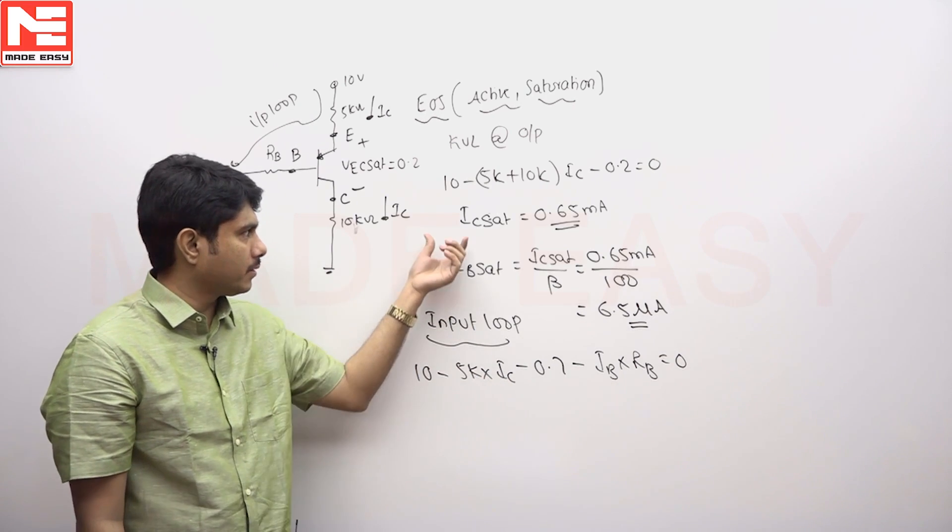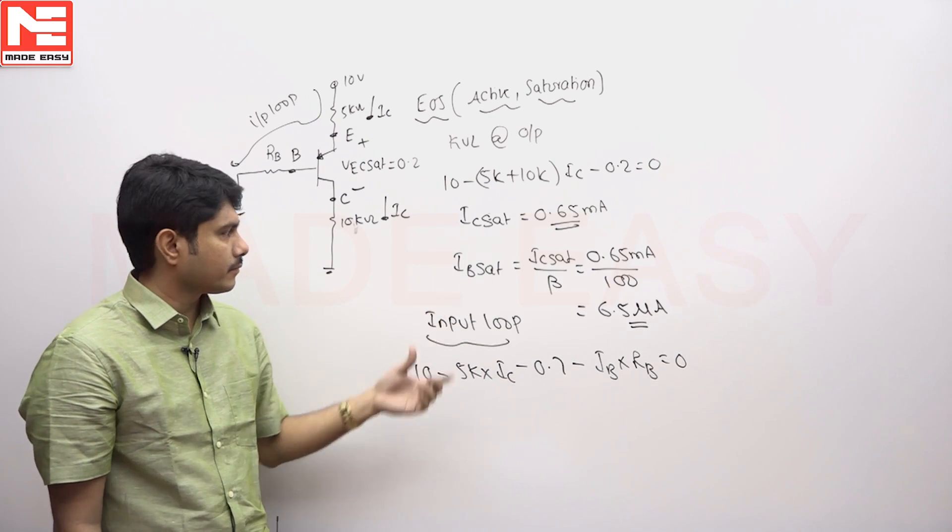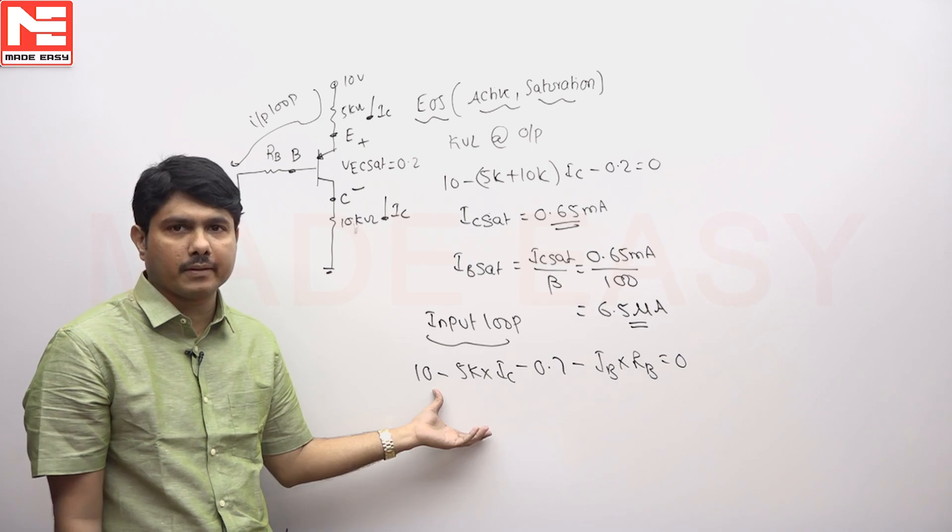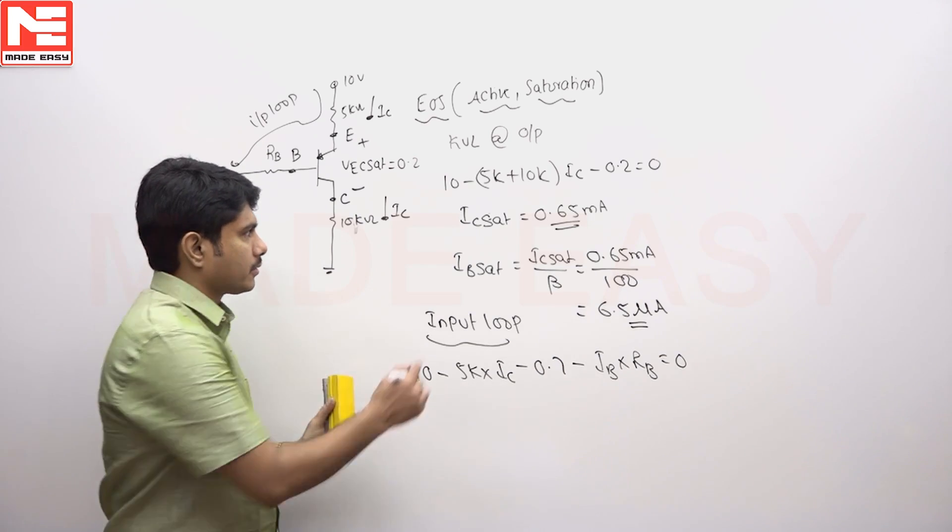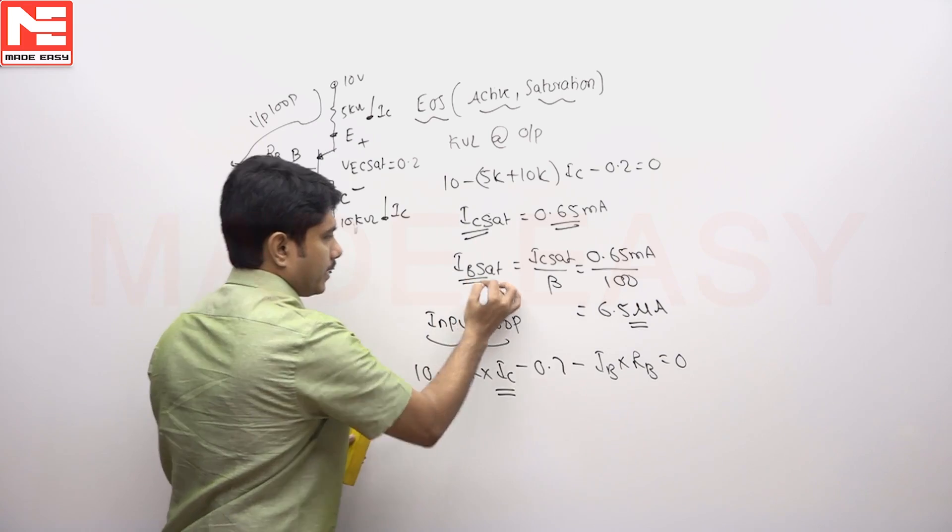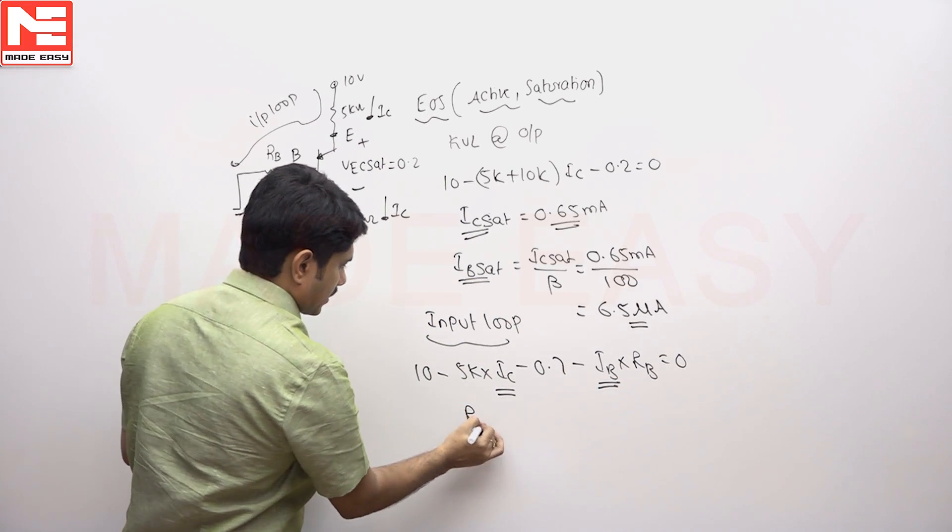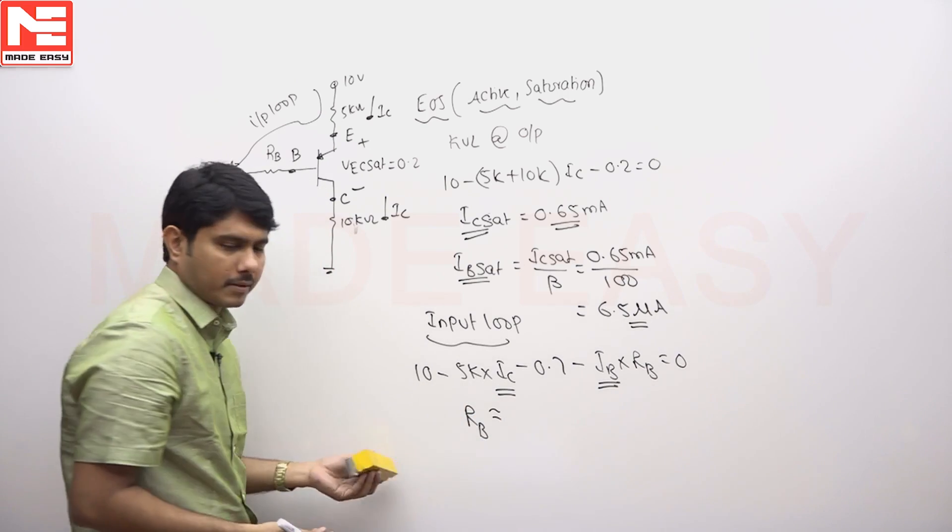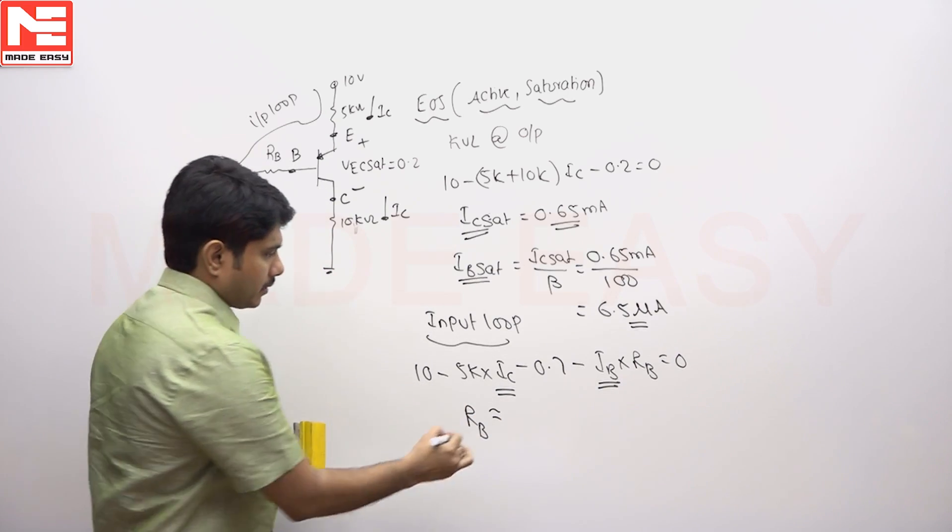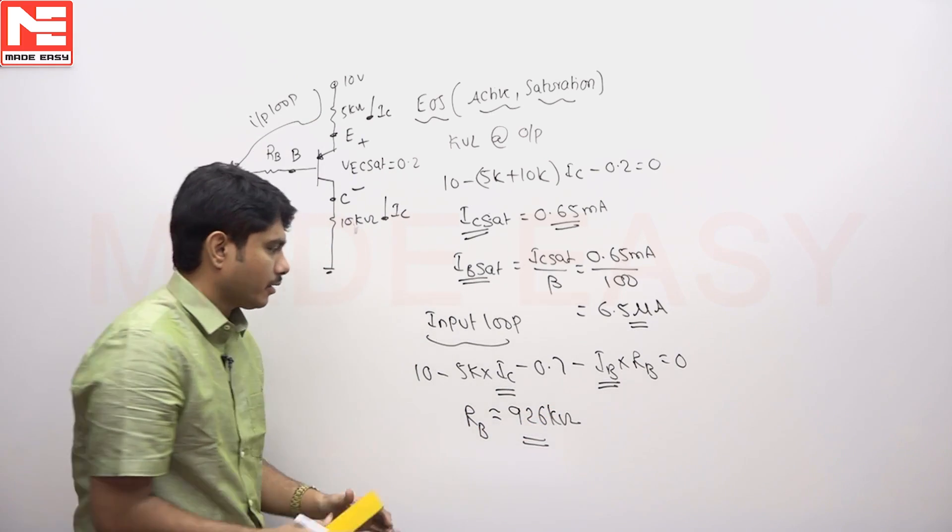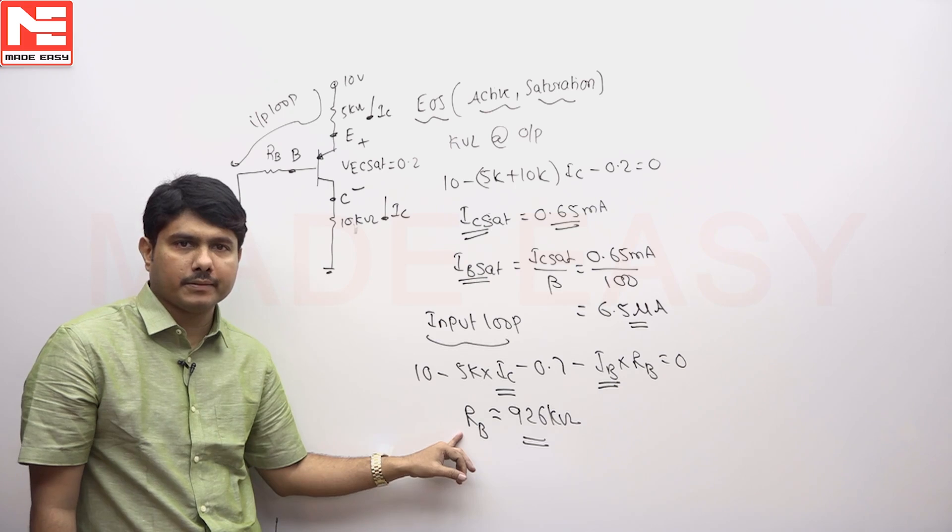So IC is nothing but IC sat value I am taking. IB sat value that is nothing but this value. So that boundary value you can find RB design. So substituting this value as IC, IB as this value, then RB is coming approximately some answer is expected as 926 kilo ohms. So RB design is coming nearly 926 kilo ohms value.